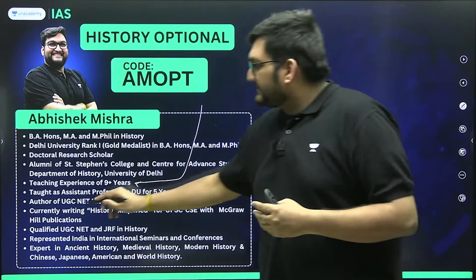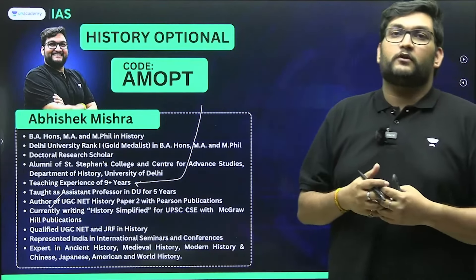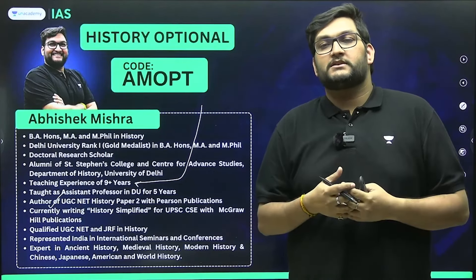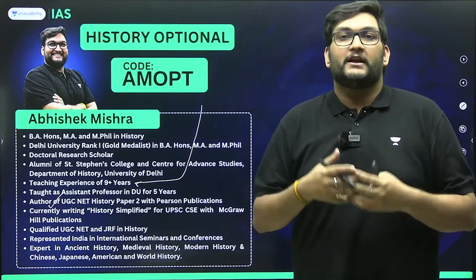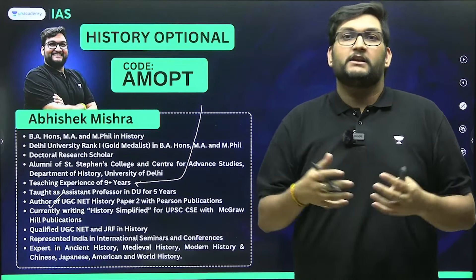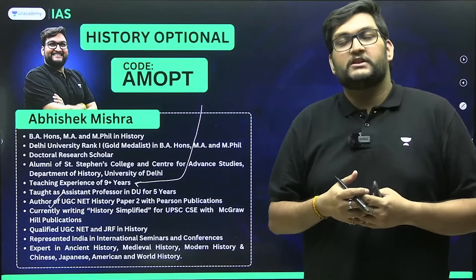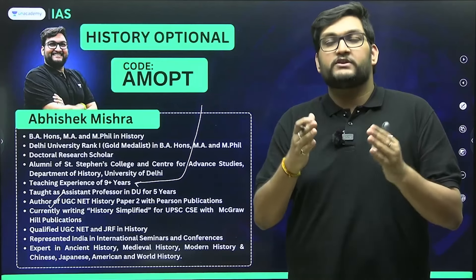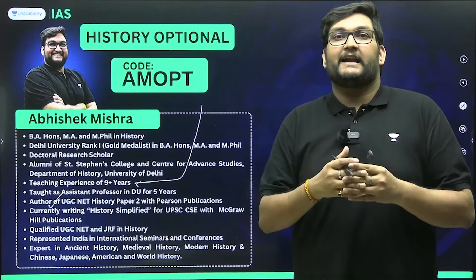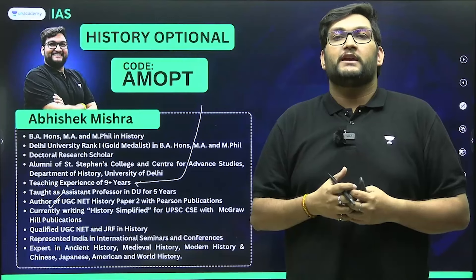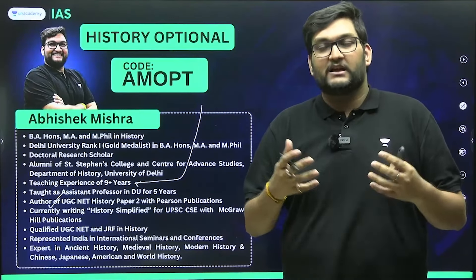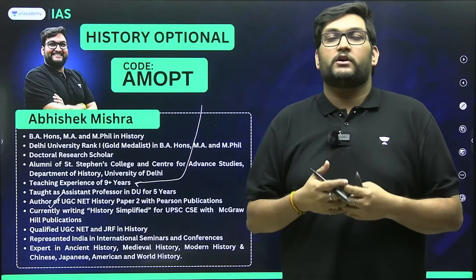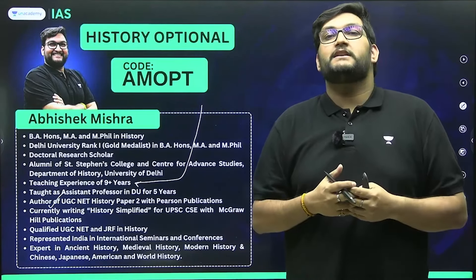I am also now going to be the author of two books. There is already one book in the market by Pearson Publications under the UGC Paper 2 history book, and by end of this year I will also be the author of a history simplified book under McGraw Hill Publications — a book which is going to be a one-stop solution, covering ancient, medieval, art and culture and modern India in the same book, negating the need for multiple books. That is going to be the Laxmikant of history.